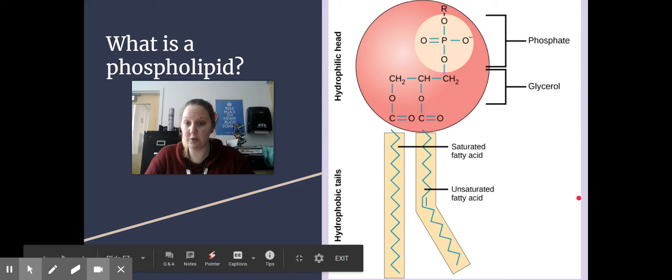This is your typical structure of a phospholipid. You see your phosphate group right up here, our glycerol, and then two fatty acids. They can either be saturated fatty acids or unsaturated fatty acids. The main difference between them is that unsaturated fatty acids have a double bond, where saturated fatty acids do not.